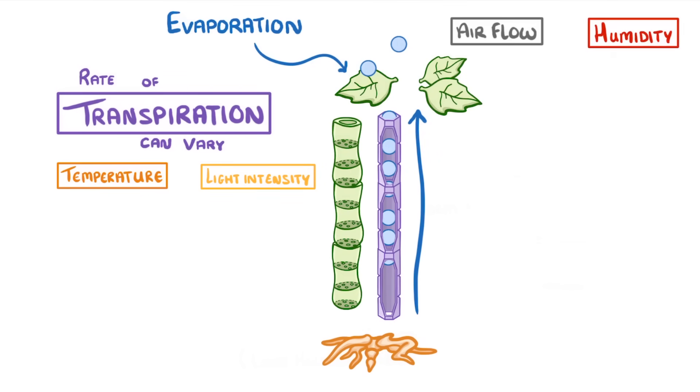The brighter the light intensity, the more photosynthesis that can take place, which means that more stomata will have to be open to let in the carbon dioxide required for photosynthesis. At the same time, more water can evaporate, which means a higher rate of transpiration.